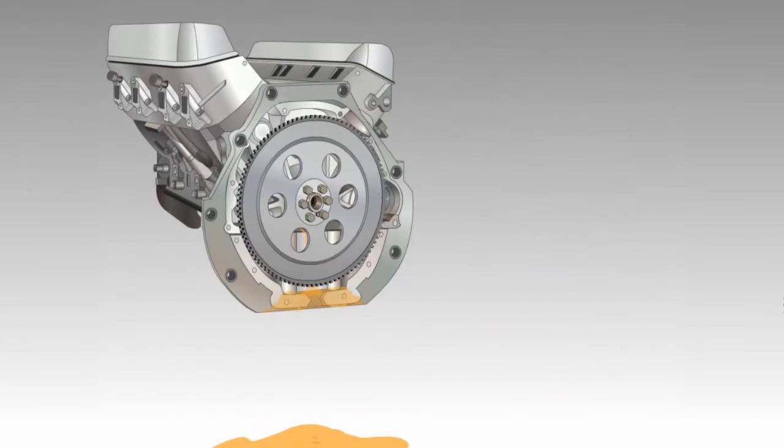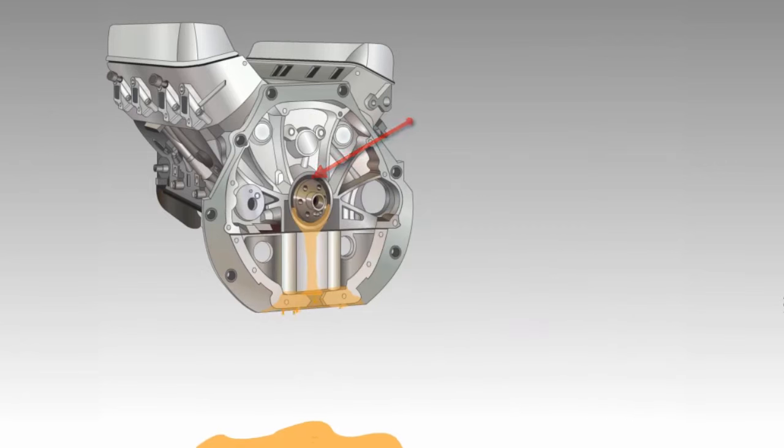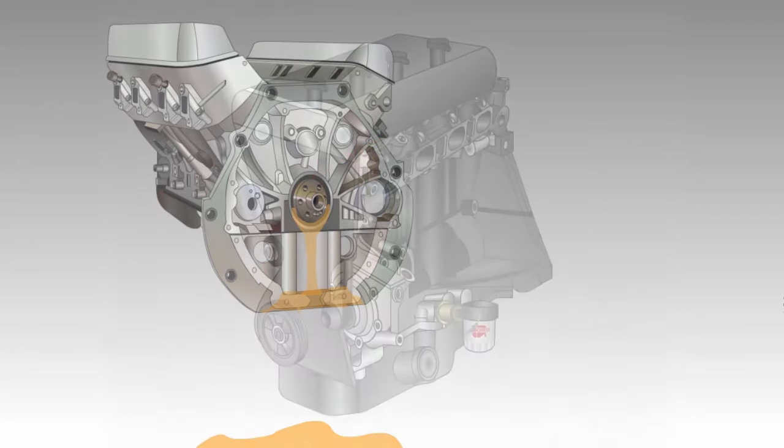A rear main seal leak will produce oil drips from the rear of the engine. This seal requires a great deal of labor to replace as the transmission must be removed in order to gain access.